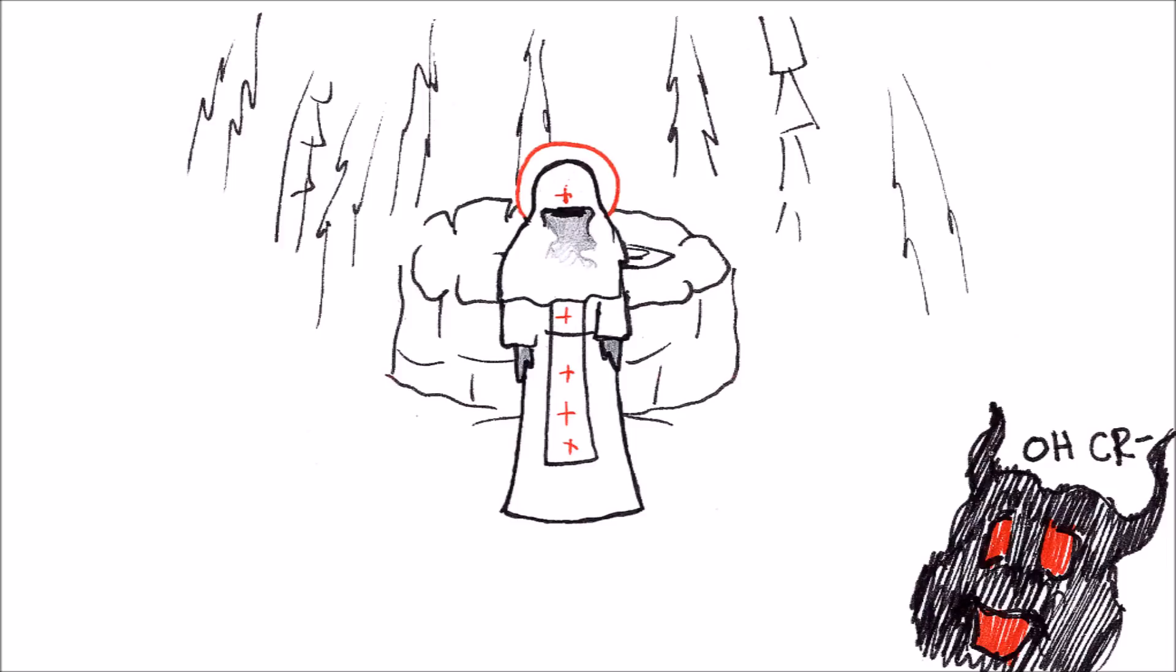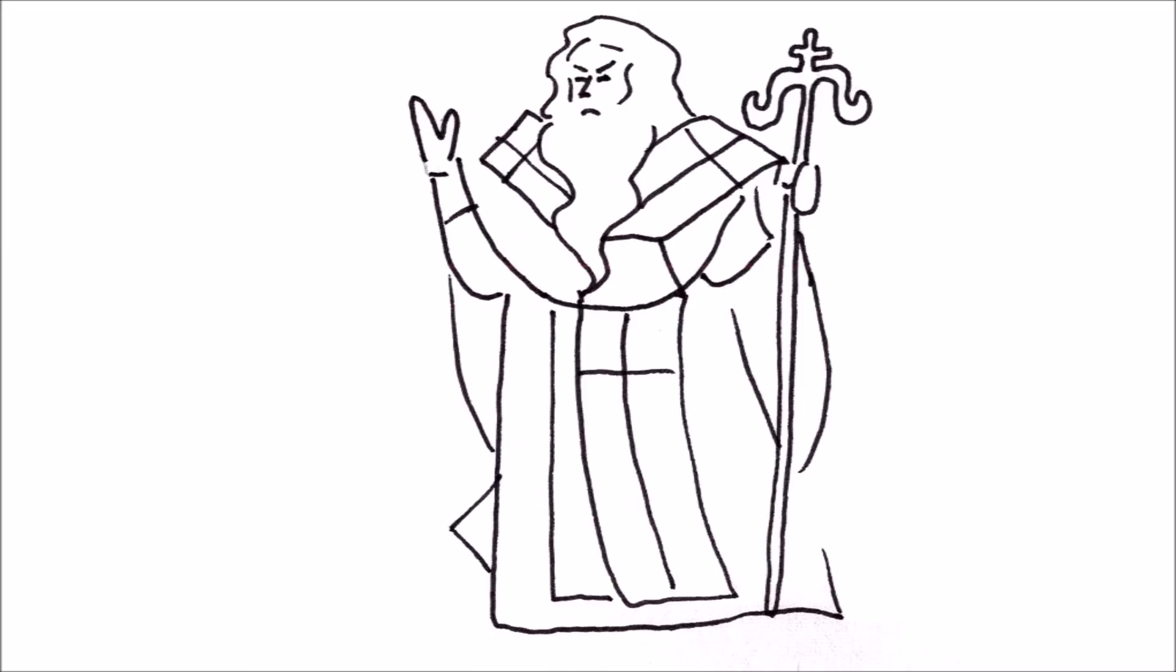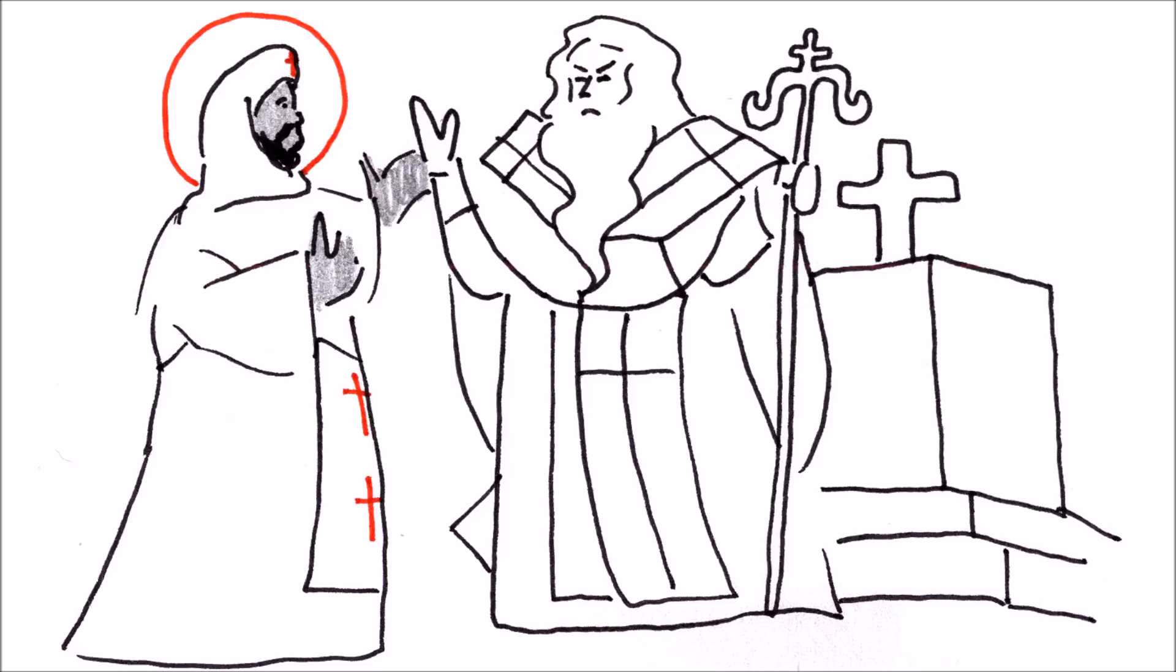Due to his virtues, St. Moses was ordained a deacon. Once, a bishop decided to test him, and as St. Moses was about to enter the altar, the bishop forbade him, telling him that he is unworthy to enter, being a lowly Ethiopian. St. Moses withdrew without saying a word. Upon seeing this, the bishop immediately ordained him a priest.